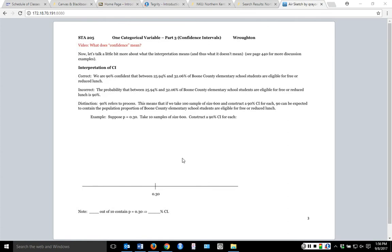We did a 90% confidence interval. So what we're going to do is if we had 100 different people take a sample of 600 students and construct 90% confidence intervals for each, 90 of those intervals would be expected to contain the population proportion. That's sort of what the distinction means.